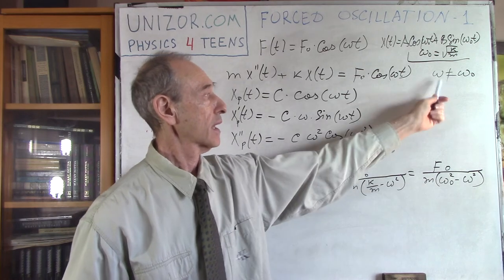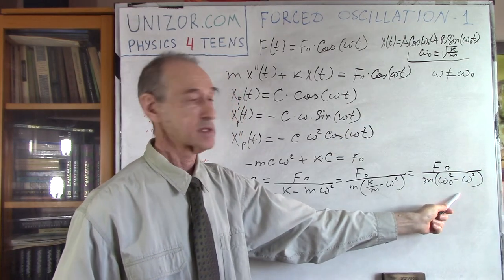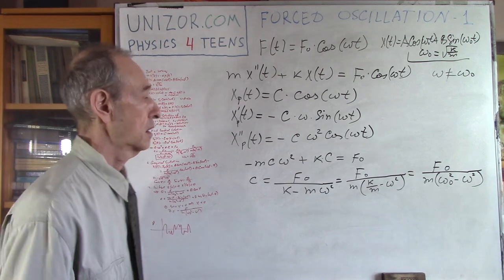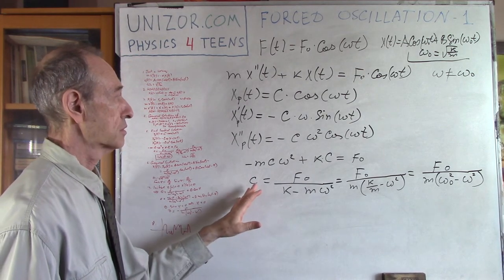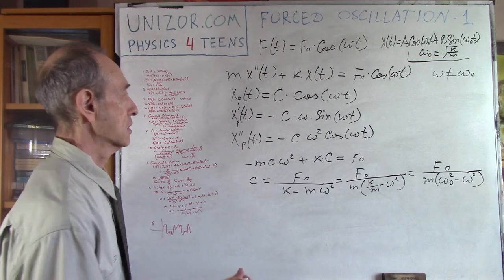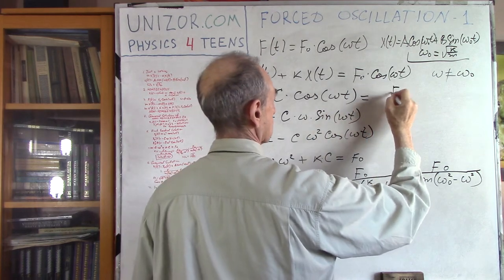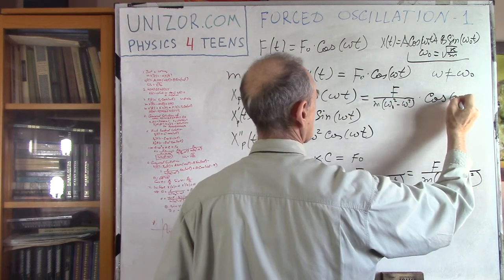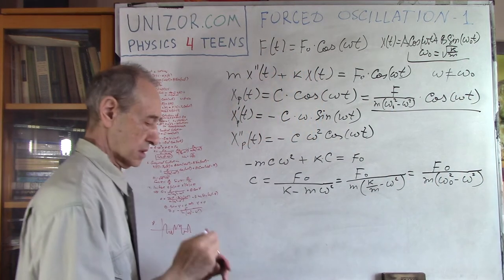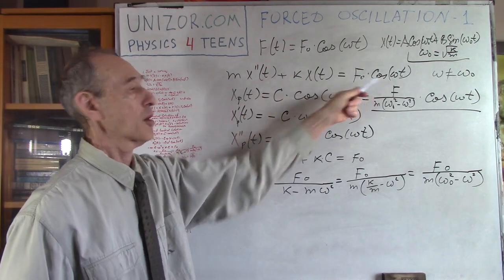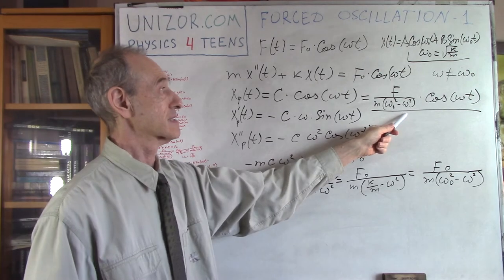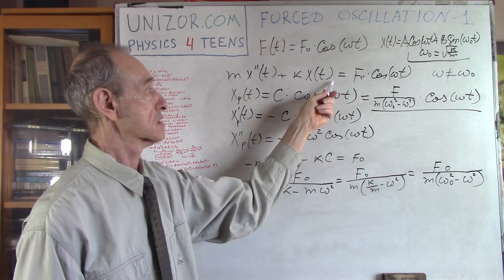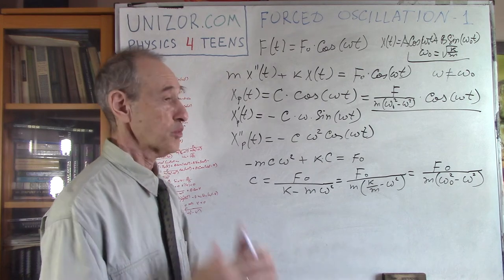We have found one particular solution: X_p(t) = F0 / (m·(ω0² - ω²)) · cos(ωt). Adding this to the general solution of the homogeneous equation — where A and B can be anything — gives us the general solution to the non-homogeneous equation. We have solved the equation.